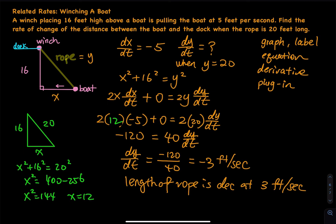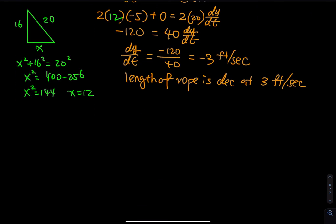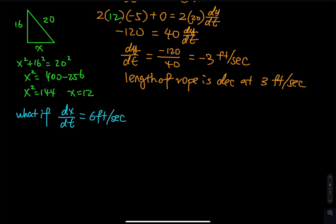Here is a what-if scenario. What if instead of being pulled toward the dock, you want to drive the boat away? So what if dx/dt equals positive 6 feet per second? That means you are driving the boat away from the dock — you turn on the boat's engine and drive away.